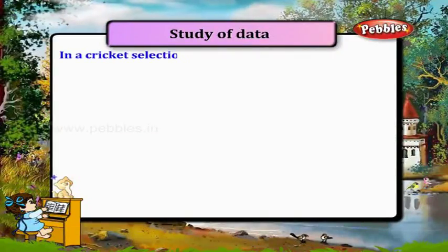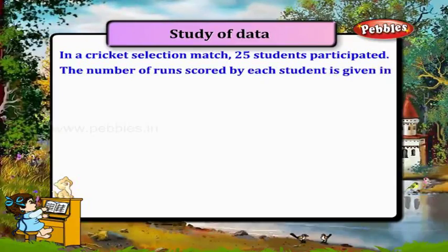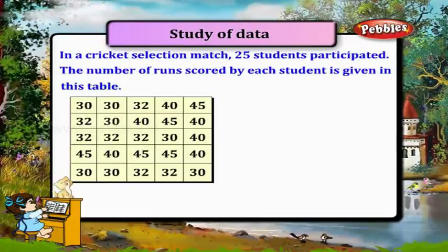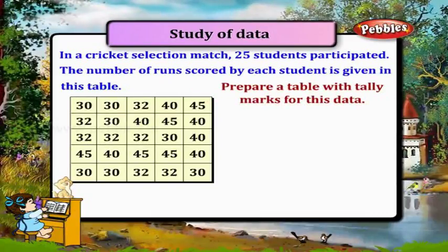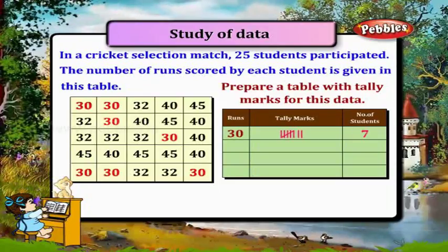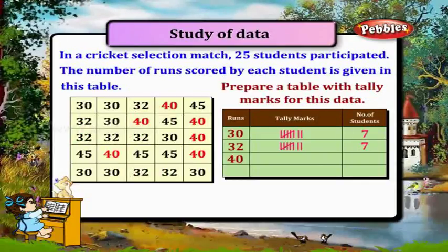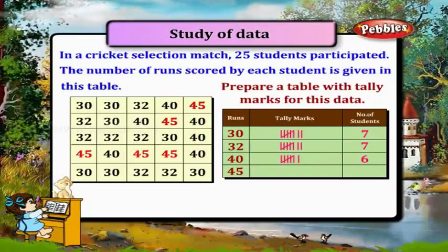In a cricket selection match, 25 students participated. The number of runs scored by each student is given in this table. Let us prepare a table with tally marks for this data. 30 runs — 7 students. 32 runs — 7 students. 40 runs — 6 students. 45 runs — 5 students.